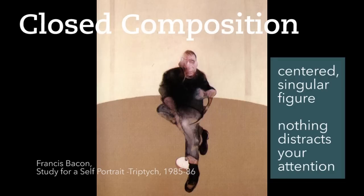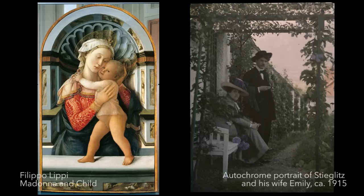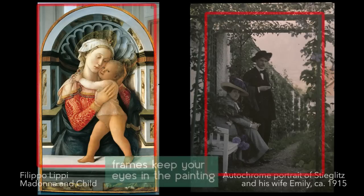A closed composition is where all the elements are arranged within the frame to have a clear focal point. The other elements don't try to draw the viewer's eye from one point to another, but rather complement the focal point. A closed composition is often more static and stable.